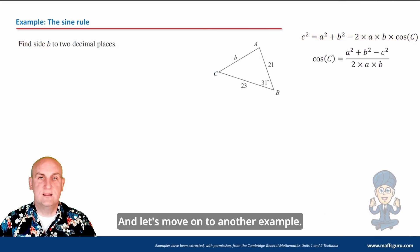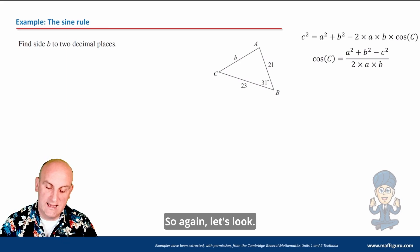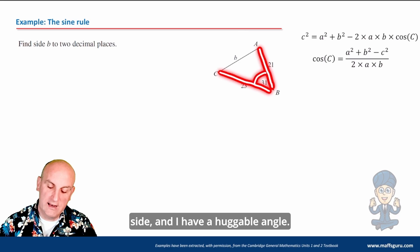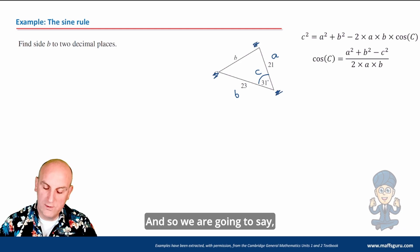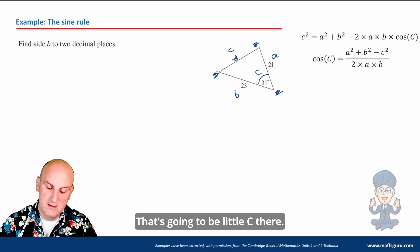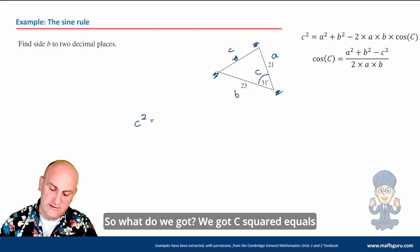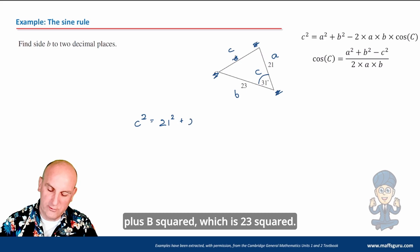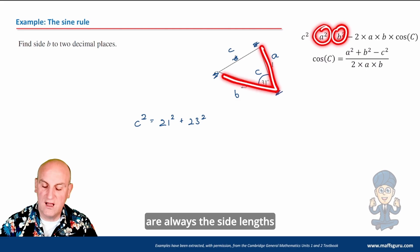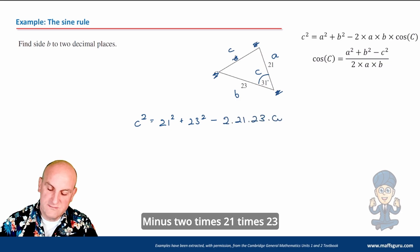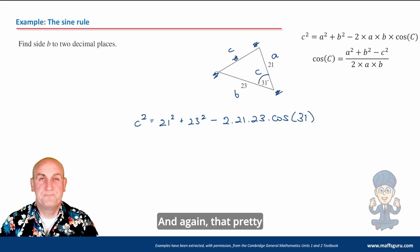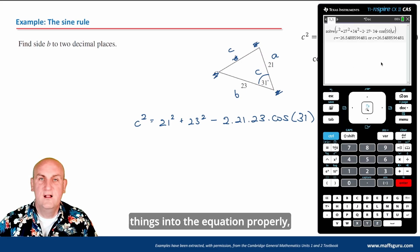Next example — find side b to two decimal places. I've got a side, a side, and a huggable angle, confirming I use the cosine rule. I'll call one hugging side a, the other b, and the angle C. So the formula becomes: c squared equals a squared plus b squared minus 2ab cos C. That's 21 squared plus 23 squared minus 2 times 21 times 23 times cosine of 31 degrees.